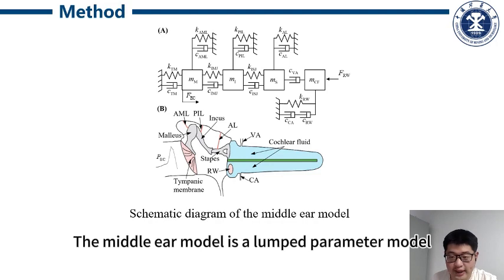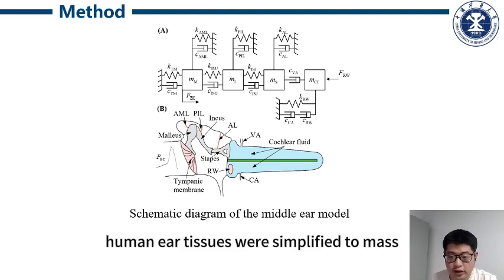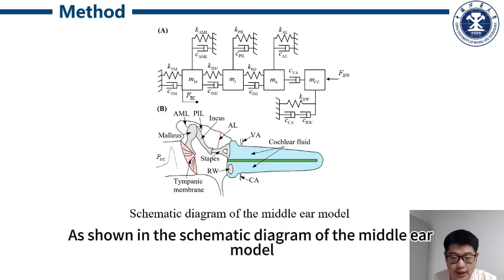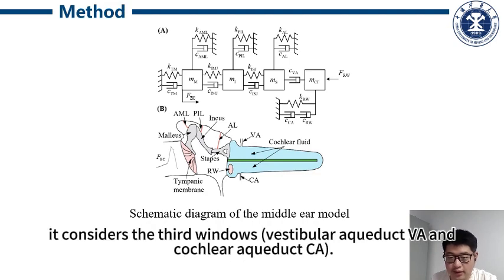The middle ear model is a lumped parameter model, in which the middle ear features were simplified to mass, stiffness, and damping. As shown in the schematic diagram of the middle ear model, it considers the third windows with the vestibular duct and cochlear duct.